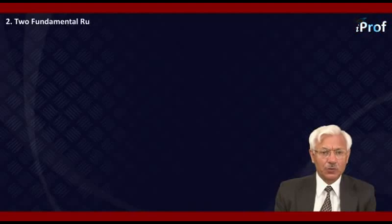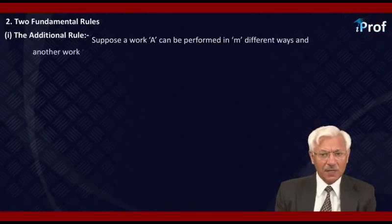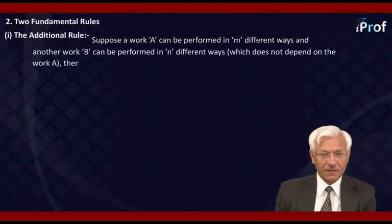The concept of permutation and combination depends on two fundamental rules. First, the addition rule. Suppose a work A can be performed in m different ways, and another work B can be performed in n different ways which does not depend on the work A.